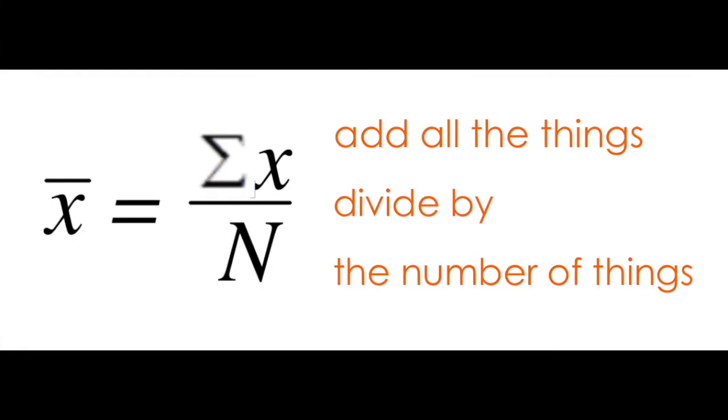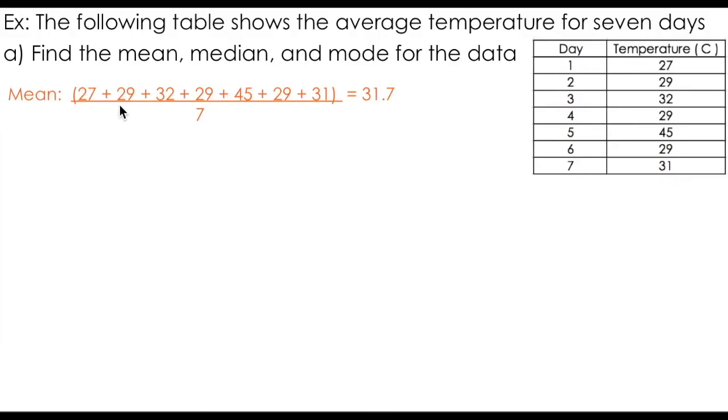Recall that to determine the mean, I can just add up all of the data entries and divide by the total number of data entries. In this case, adding all the data values and dividing by the seven days for which I've collected the data, I get 31.7 degrees Celsius.